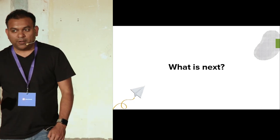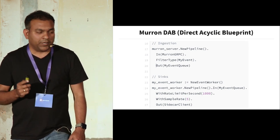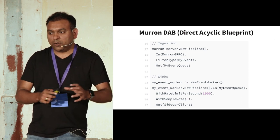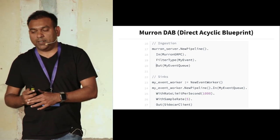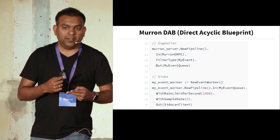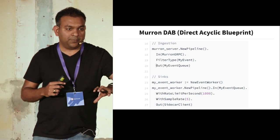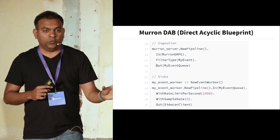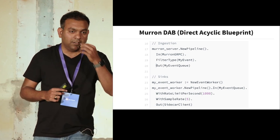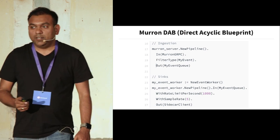What are we working on next? Number one is Marin DAB — Direct Acyclic Blueprint. The vision is to give users a DSL to create their own pipeline and infrastructure and manage it themselves, rather than worrying about how to spin up infrastructure or manage event lifecycles. Writing a pipeline and infrastructure as code is a very powerful feature that empowers users.